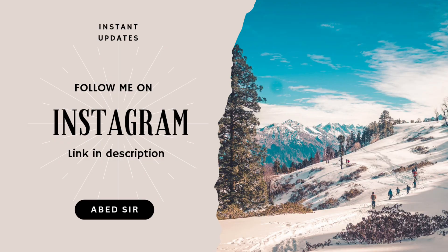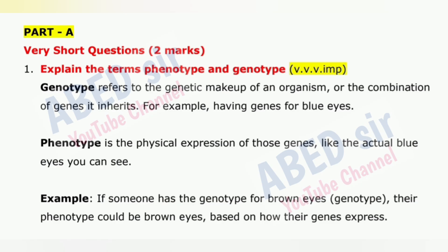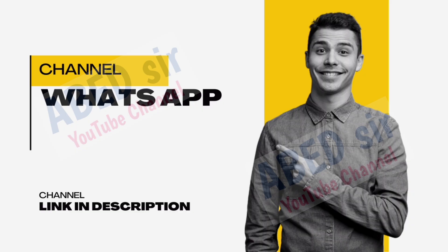First important question is 1: Explain the terms phenotype and genotype. Genotype refers to the genetic makeup of an organism, or the combination of genes it inherits — for example, having genes for blue eyes. Phenotype is the physical expression of those genes, like the actual blue eyes you can see. If someone has the genotype for brown eyes, their phenotype could be brown eyes, based on how their genes express.